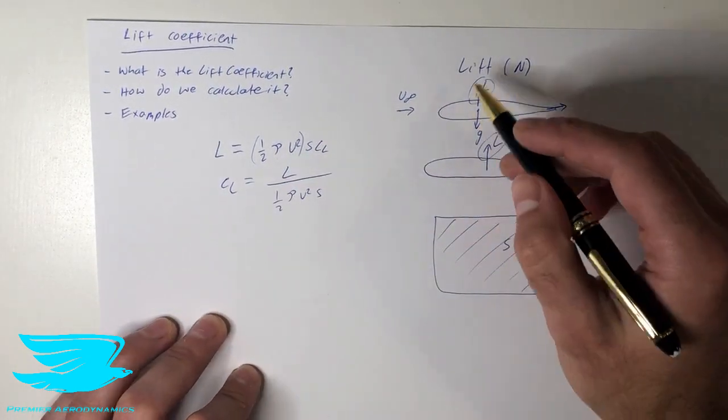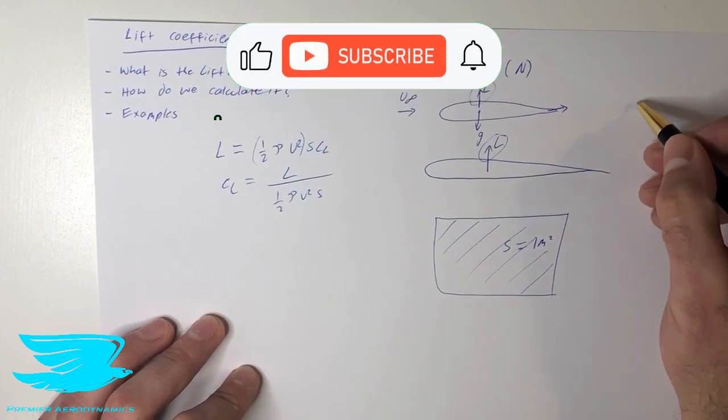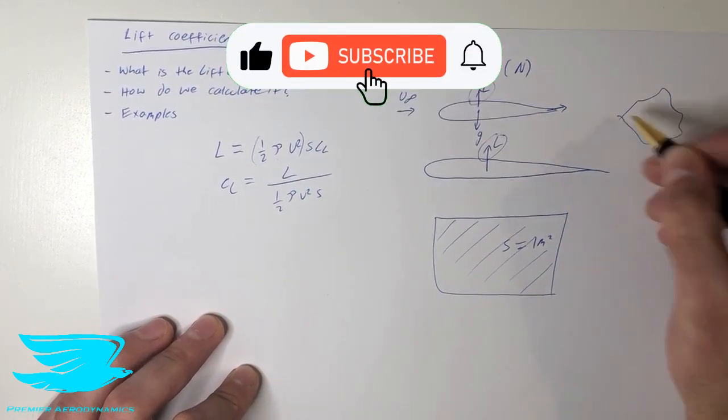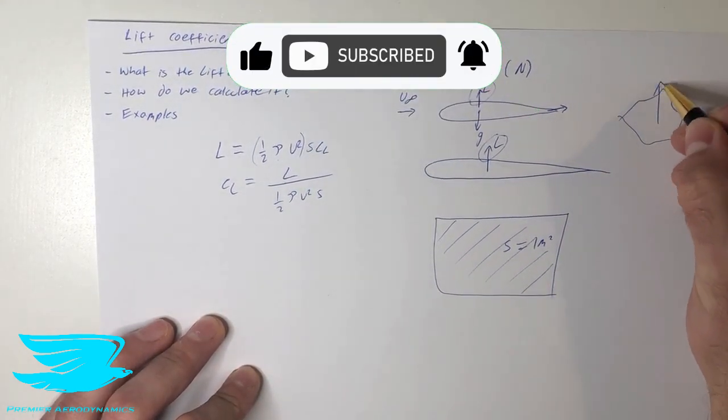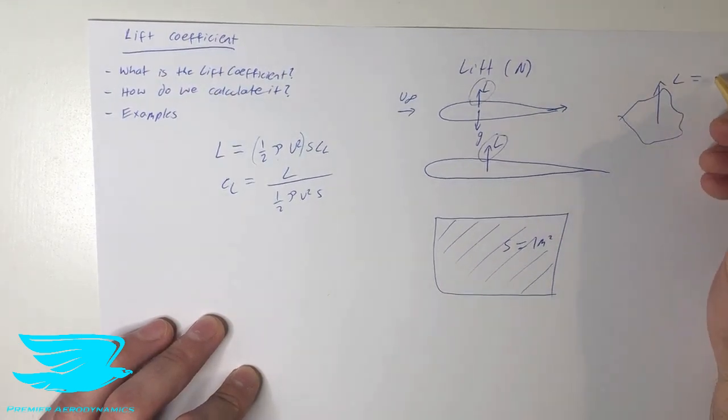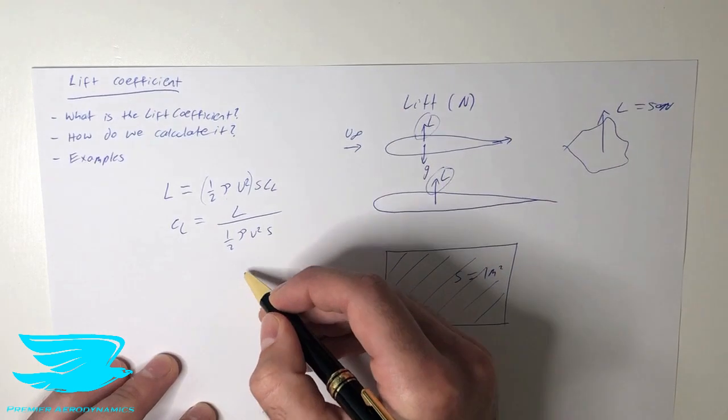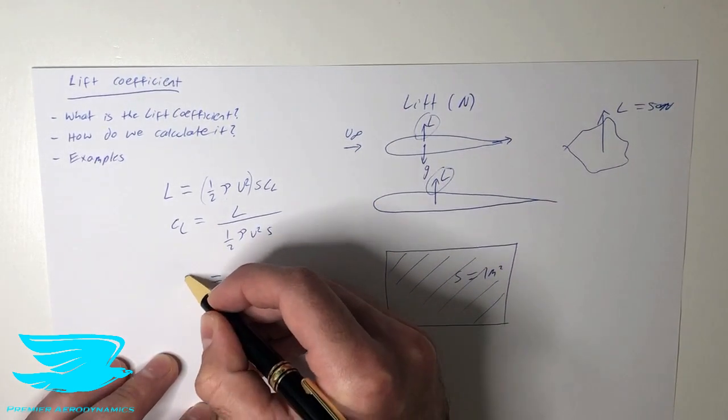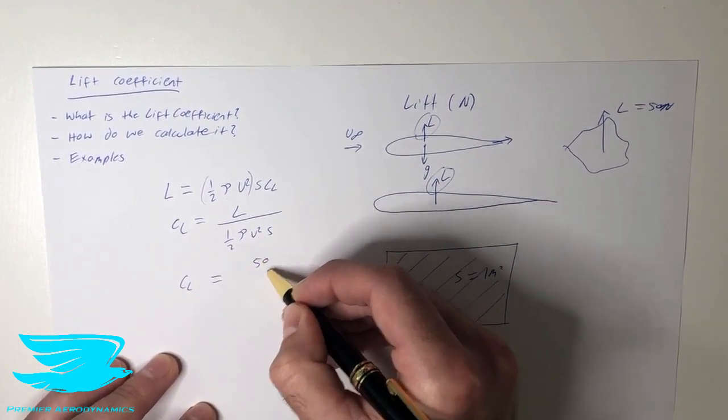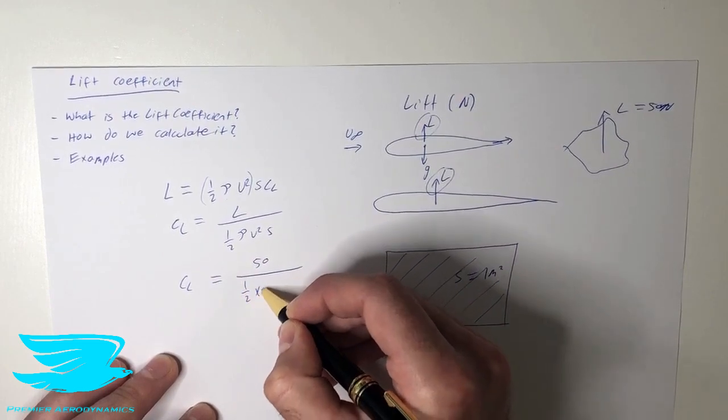So after we know what the lift is of any object, let's say we have an object that looks like this. And we have a certain lift. Let's say it's 50 newtons. We can put in 50 newtons here. So we want to find the lift coefficient, 50 newtons, divided by half,